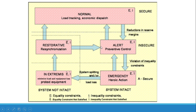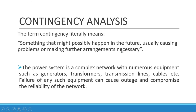Contingency analysis fits into the preventive control part of this framework. The term contingency literally means something that might possibly happen in the future, usually causing problems or making further arrangements necessary. The power system is a complex network with numerous equipment such as generators and transformers, and failure of any such equipment can cause an outage and compromise network reliability. Contingency analysis is essentially a backup plan in case of an outage.